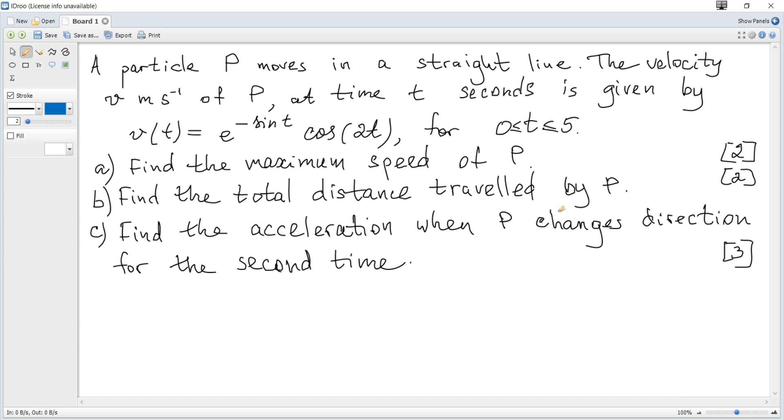A particle P moves in a straight line. The velocity V of P at time t seconds is given by this expression. Question A: find the maximum speed of P.